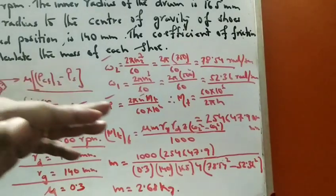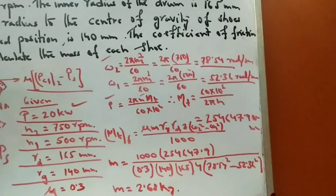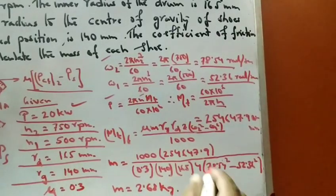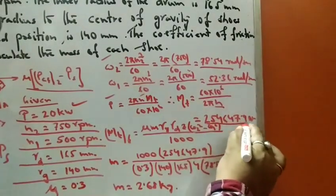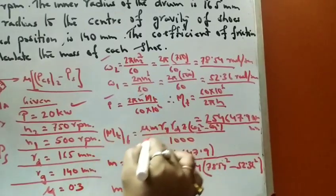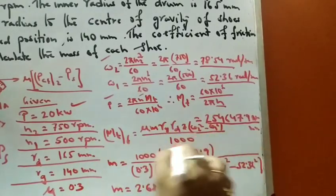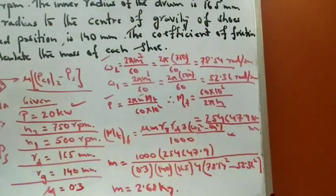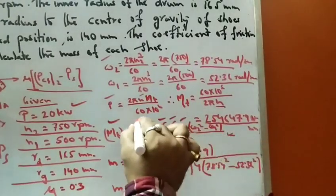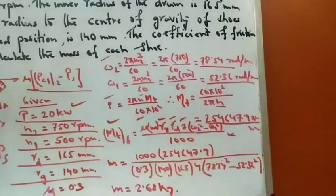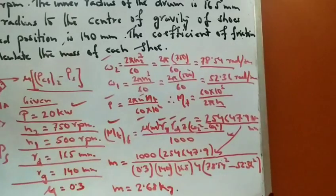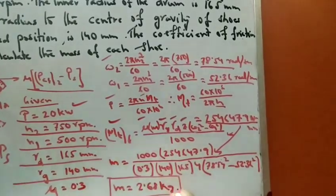Substituting N2 = 750 rpm — the speed at which contact is made — we get the torque Mt = 2546.79 Newton-millimeter. We also know that Mt = mu * m * rg * (omega2/omega1)^2 * rd * Z, a formulation derived in the previous lecture. All parameters are known except m, so we rearrange for m and substitute all values.